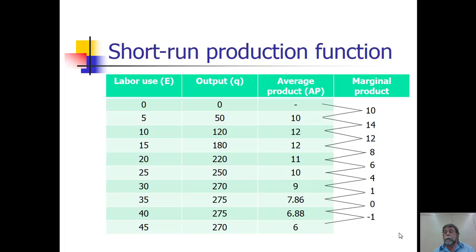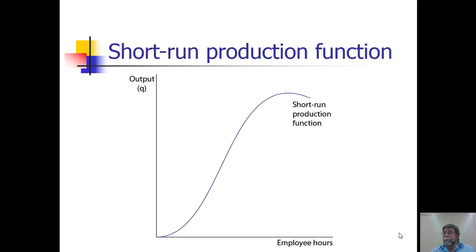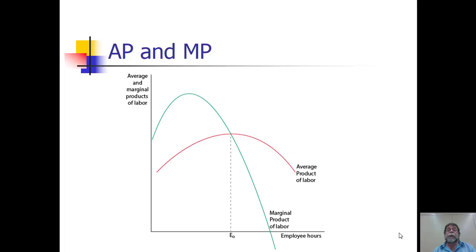Here I've illustrated a short run production function that corresponds to the tables that we've seen above. Notice initially output is rising at an increasing rate, but then eventually diminishing return sets in and output starts increasing at a decreasing rate. And eventually here, output reaches a maximum and begins to fall.